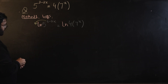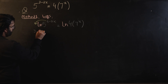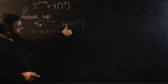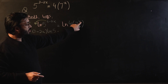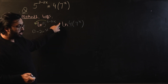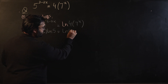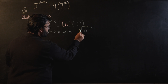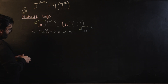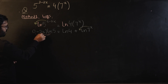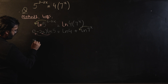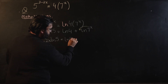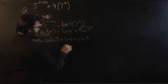Using the power rule, we bring the exponent forward: three minus two x, multiplied by log of five. On the right-hand side, the power x is not the power for the entire argument, so we break it into two logarithms: log of four plus log of seven to the power x, then use the power rule to bring x forward. Distributing log of five gives us three log five minus two x log five equals log four plus x log seven.